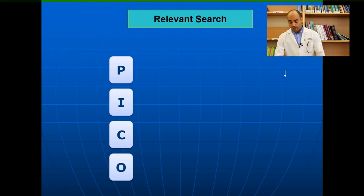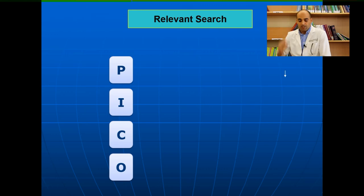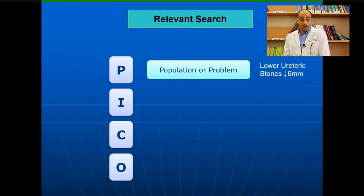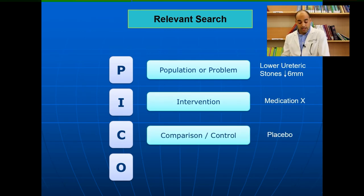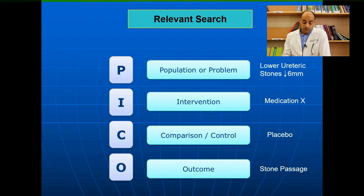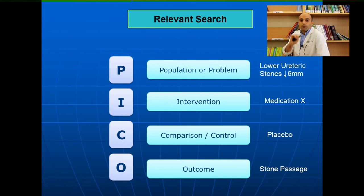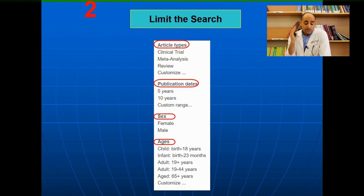Another very useful tool is PICO, which helps formulate a research question before conducting a literature review. P stands for Population or Problem, I for Intervention, C for Control or Comparison, and O for Outcome. For example: population — lower ureteric stone less than 6mm; intervention — tamsulosin; comparison — placebo; outcome — stone passage. You can formulate your research question using PICO before doing the literature review.